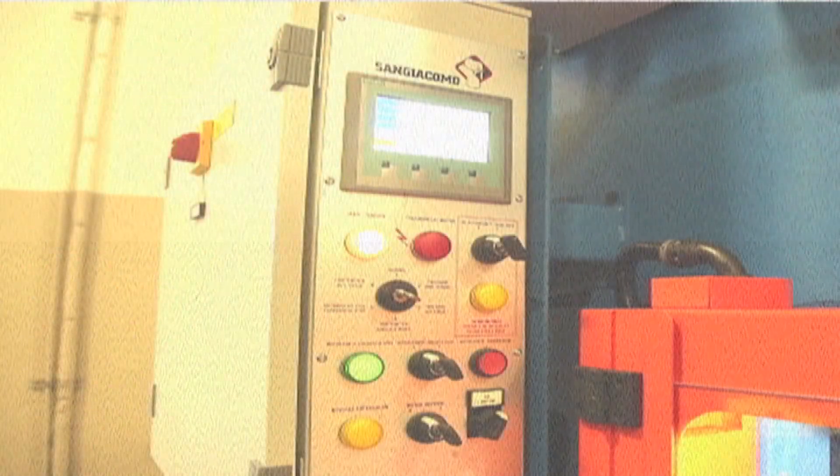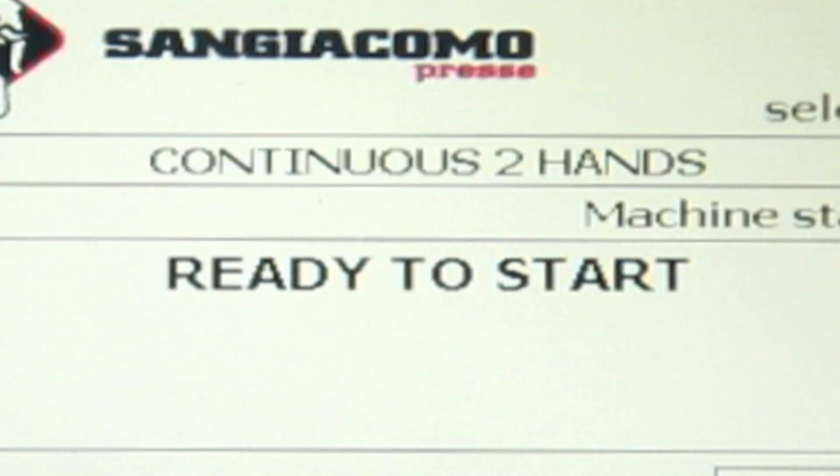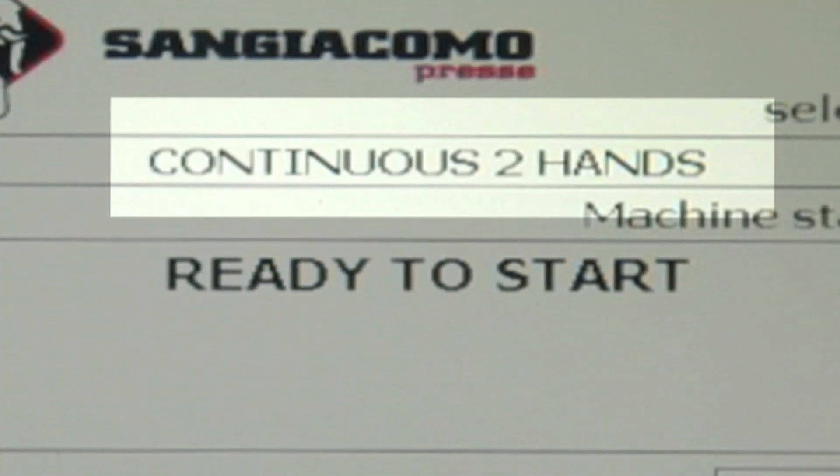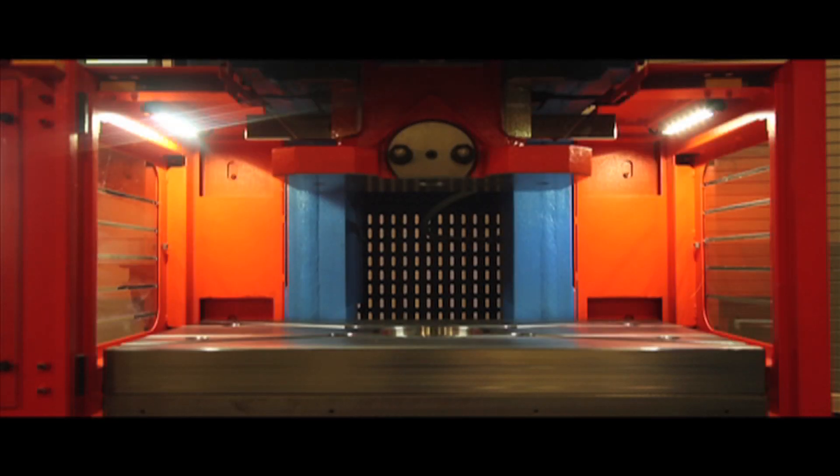We'll go back to the home screen. Okay, I'm switching it to continuous cycle with two hands. I'm turning on our die illumination area lights.